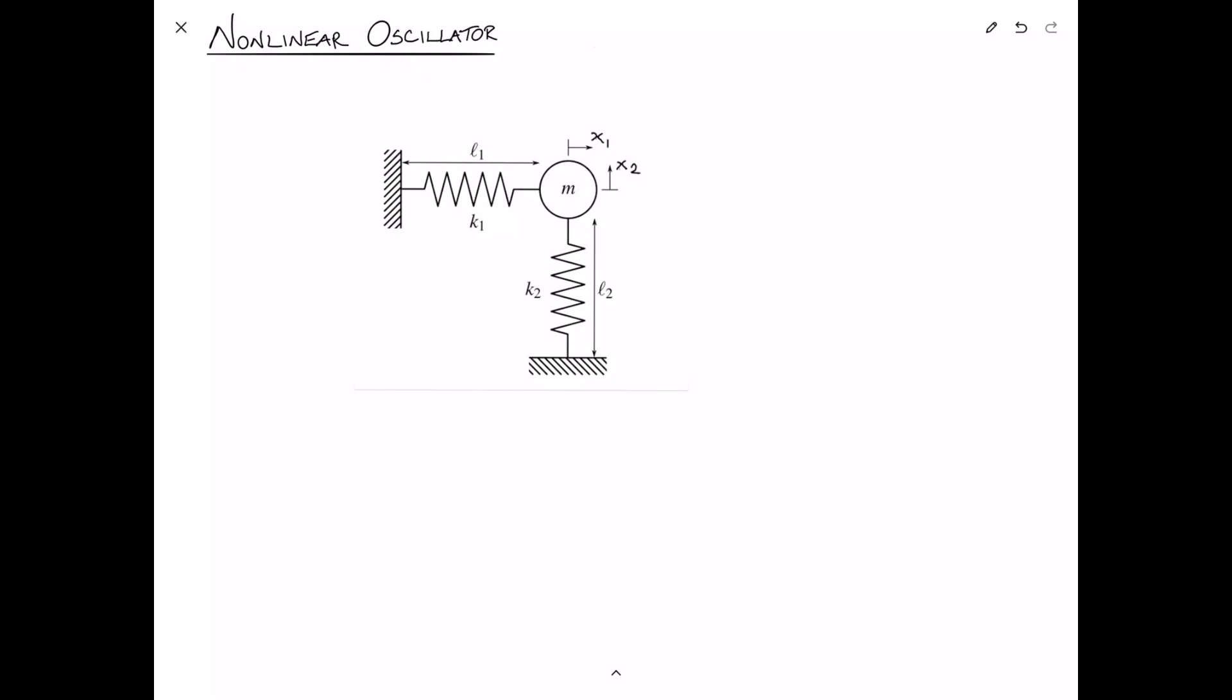Spring constants k1 and k2 can be assumed to be constant. At first blush, when we look at this, we think this is the simple harmonic oscillator, right? We know the equations of motion here.